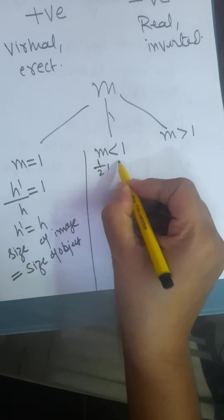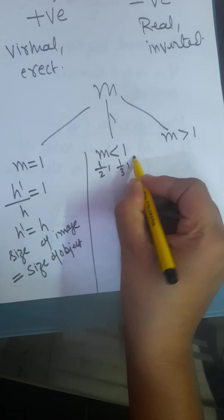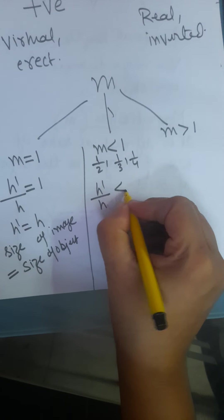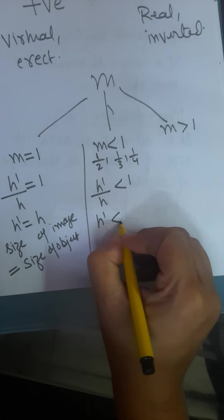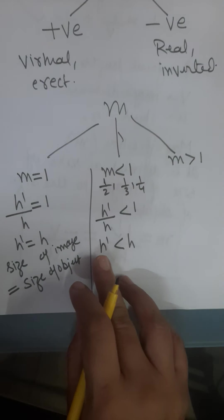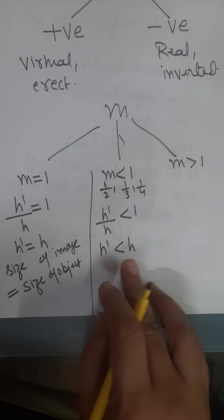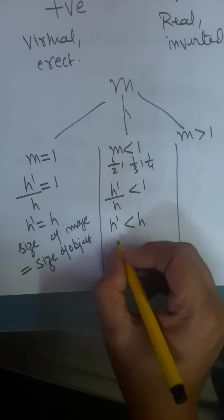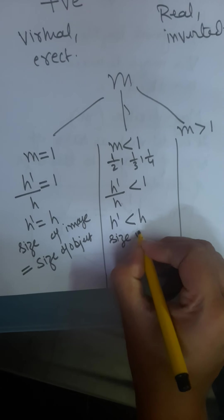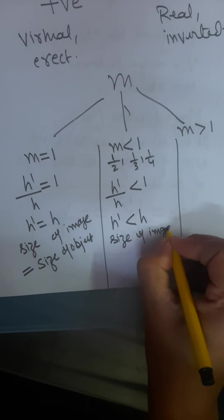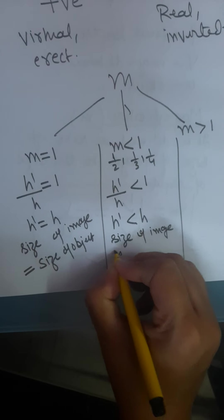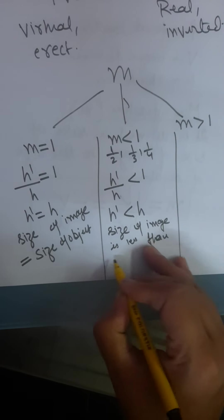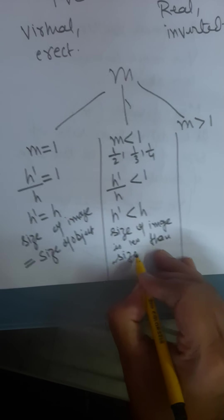Less than 1 means values like 1/2, 1/3, 1/4. If H dash by H is less than 1, then H dash is less than H — meaning the size of the image is less than the size of the object. So the image is smaller.